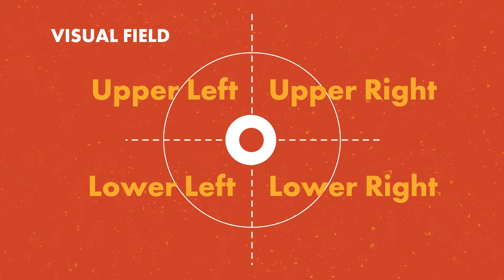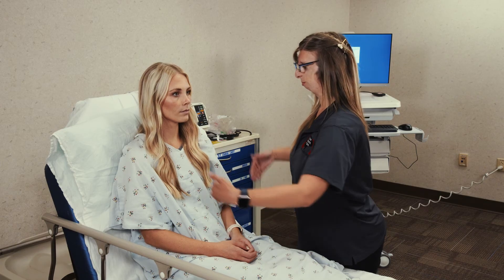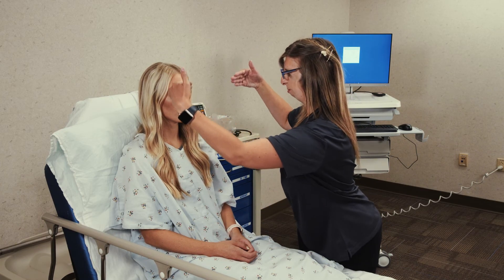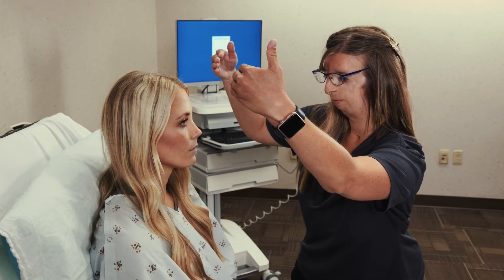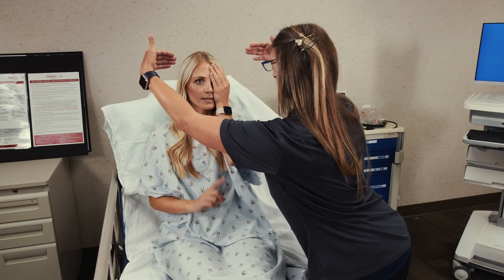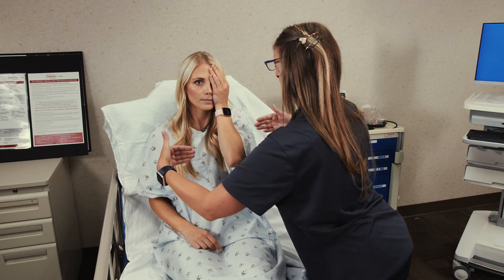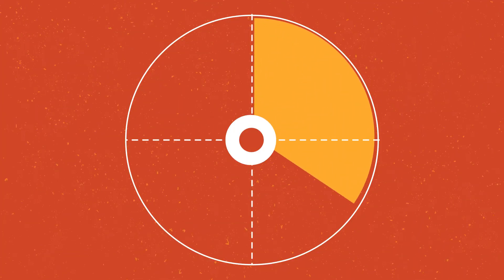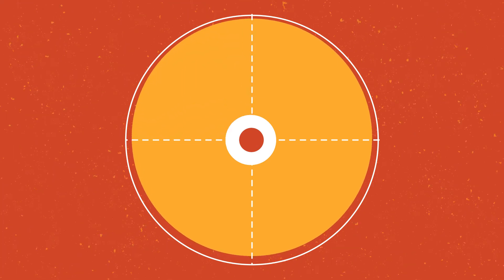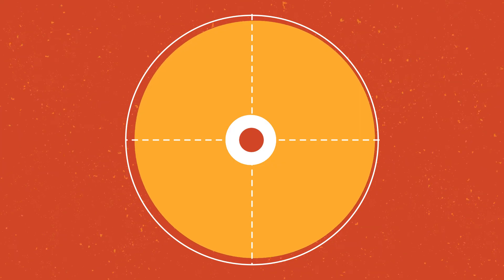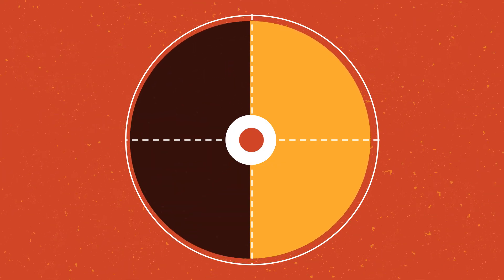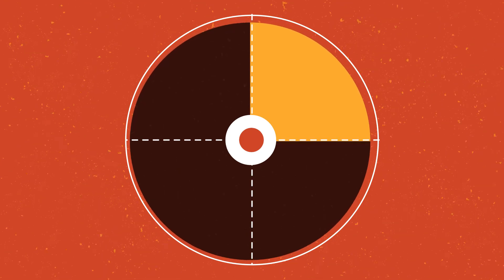Both eyes must be tested separately. To ensure accuracy when testing the visual field, you should stand one to two feet in front of the patient. Position your hands within the patient's field of vision, ideally no further apart than the width of the patient's shoulders. With the patient looking straight ahead, have them cover one eye at a time and answer yes or point when they see your fingers wiggling. A normal finding would be if the patient can see in all four quadrants with both eyes. An abnormal finding would be if the patient cannot see in one or more of the visual quadrants with one or both eyes, and/or reports double vision.